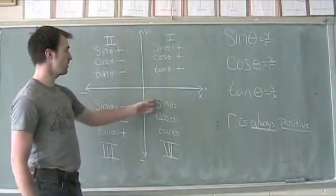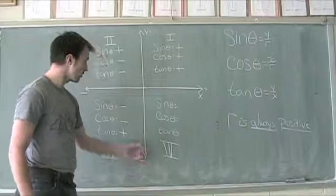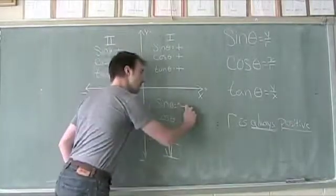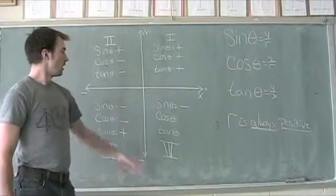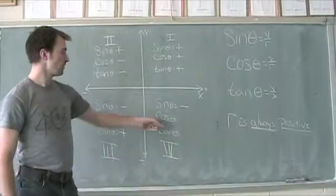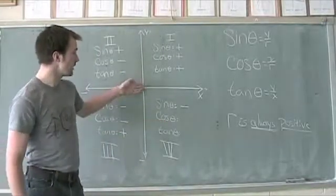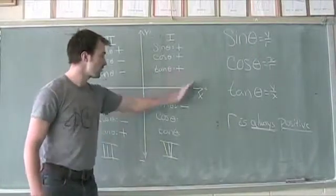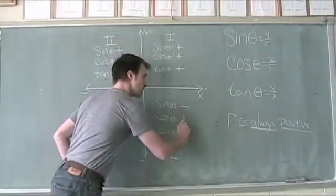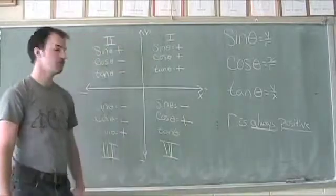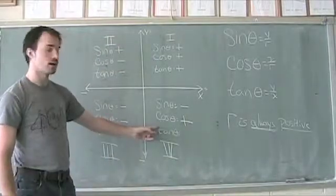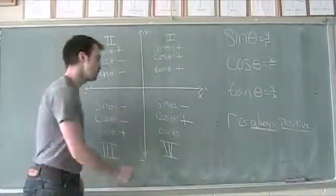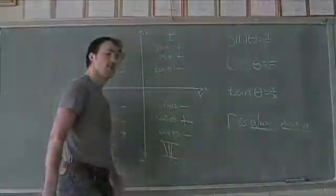In quadrant 4, the sine value is again the y value — y is negative, so negative divided by positive is negative. The cosine of theta uses the x value, and now we switch back to the positive side, so positive divided by positive gives a positive value. The tangent value here is a negative divided by a positive, which gives a negative value.